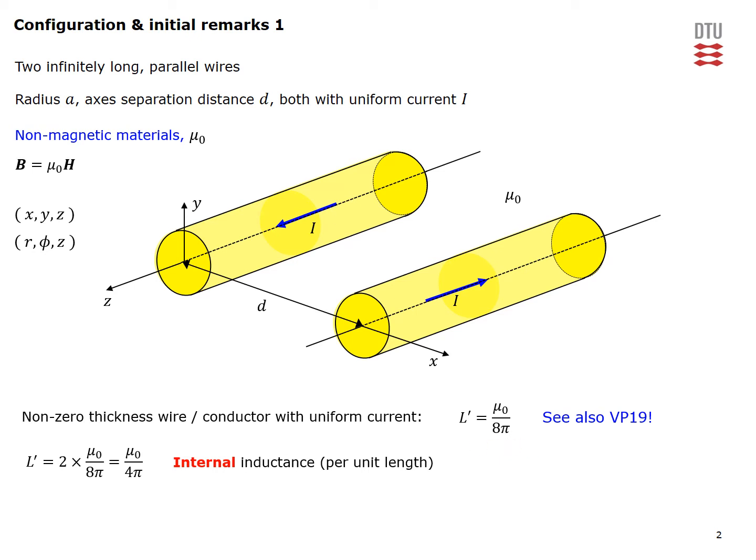In the present case we have two such conductors that share the same current, so our wires are in series connection so that the internal inductance of our configuration is actually twice the value. So our internal inductance per unit length is given by the expression here.